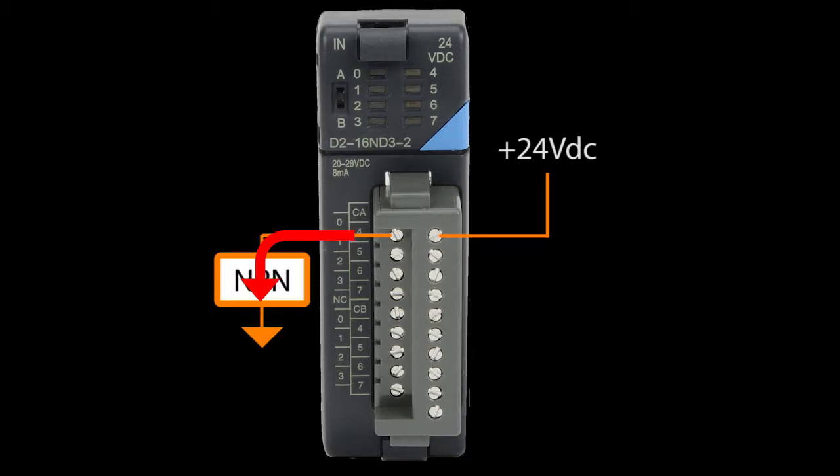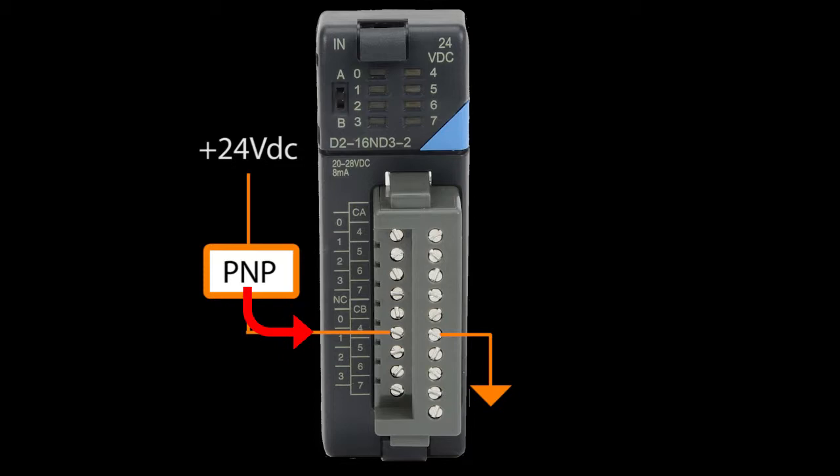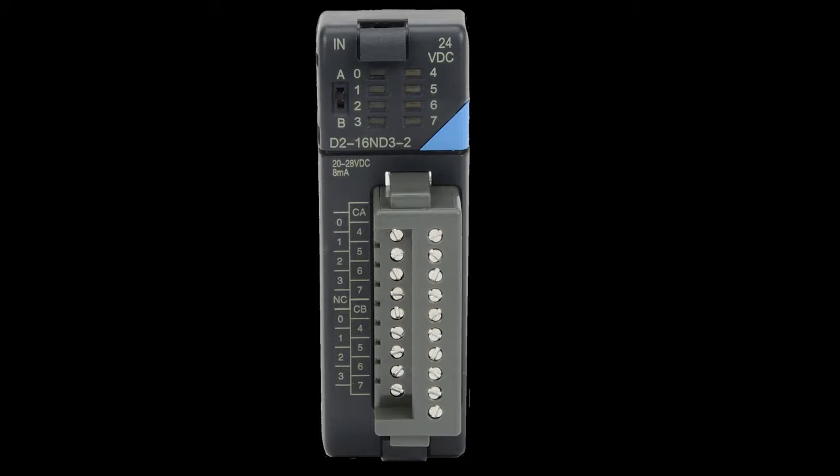And that's really all you need to remember. When you have an NPN sensor which sinks current, you need an input module that can source the current. And when you have a PNP sensor that sources the current, you need an input module that can sink the current. And since this input module handles both, we're in good shape.